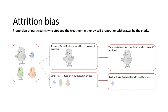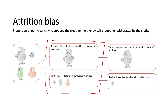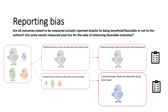The next type is attrition bias, which is about the proportion of participants who stop the treatment, either through self-dropout or withdrawal by the study. In the duck example, if during the treatment only one small duck in the control group survived while all other weaker ducks died, this is about the retention rate of participants throughout the treatment — that is attrition bias.